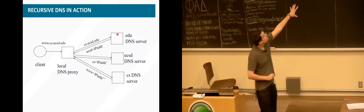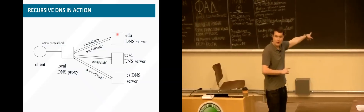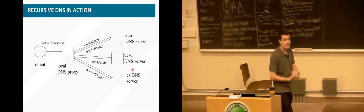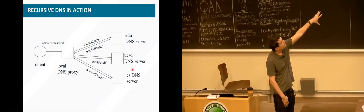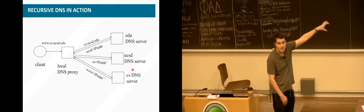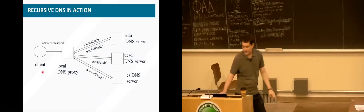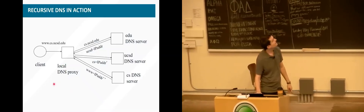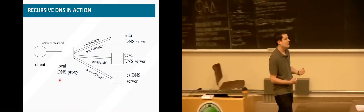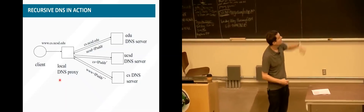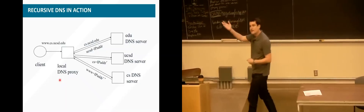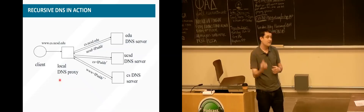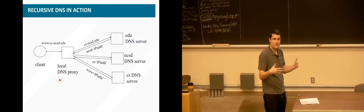A student asks: does the local DNS proxy not belong to the hierarchy? It's not really part of the hierarchy in the sense that the root, TLD, and authoritative servers are. The local DNS proxy sits on the side, interacting with that hierarchy. We have local DNS proxies for convenience — rather than having every device iterate across all those servers, at a place like UCSD with 30,000 students and 10,000 faculty and staff, we all go to a relatively small set of Facebook, Twitter, and similar sites. The proxy caches data across all users.